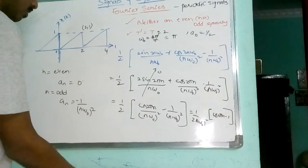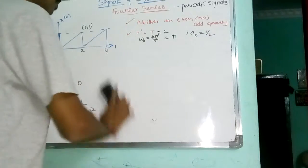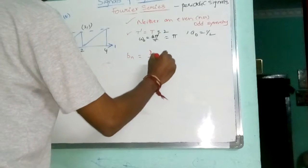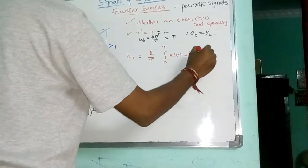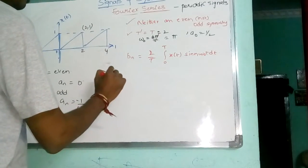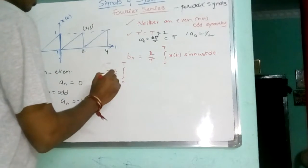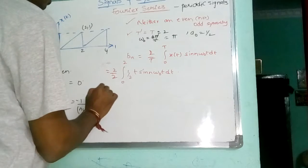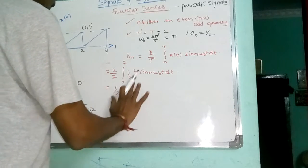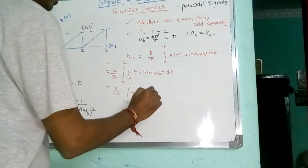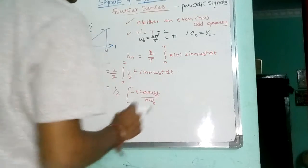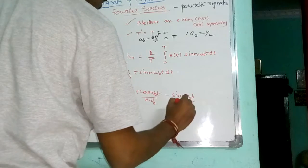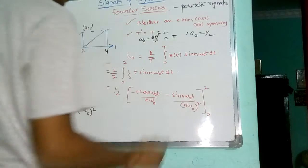So, this is about A N. Now, similarly, finding out what is B N here. So for B N, it is 2 by T, integral x of 0 to T, sine N omega naught, DT. That is 2 by T, integral 0 to T, half T, sine N omega naught, DT. Applying integration by parts: minus T cos N omega naught T by N omega naught, plus sine N omega naught T by N omega naught whole square, from 0 to 2.